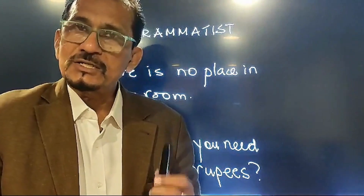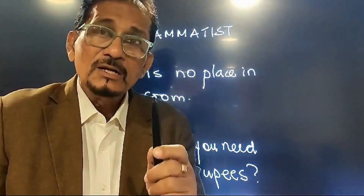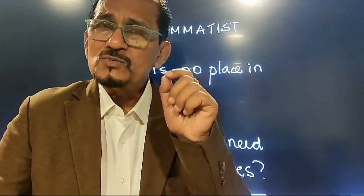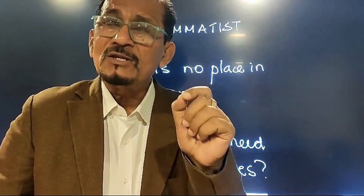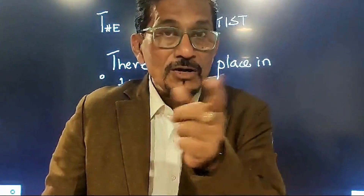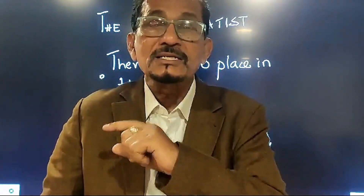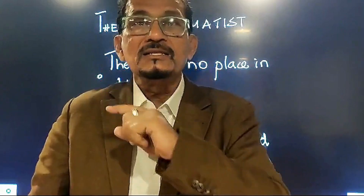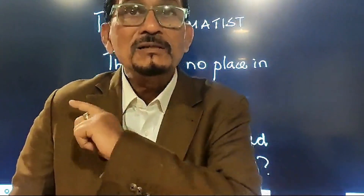Hi, welcome to one more lovely session of The Grammatist. Let's look at this sentence and try to spot the mistake. There is one problem I find with a lot of people — when they correct, they ask, 'What is wrong in this sentence?' The first thing I do is tell them there cannot be anything wrong in a sentence. Don't say 'what's wrong in this sentence.' Say 'what's incorrect in this sentence.' That's the first typical mistake that people make.